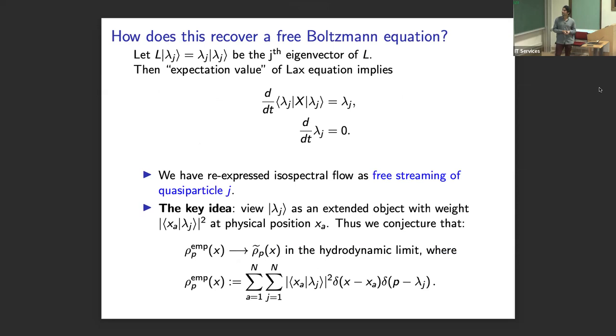And these quasi-particles should be thought of as eigenvectors of the lax matrix. So we first proposed this picture in the context of the Toda model, since that was amply covered by Herbert today, I decided to focus on Calogero, where the same story appears to hold. So what do I mean by this? Let's take this matrix L, which has this interpretation of momentum, and look at its J-th eigenvector. Then something you find, which is quite nice, is that taking the expectation value of the lax equations in this eigenvector gives you essentially the dynamics of a freely streaming particle.